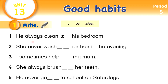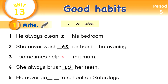Number one: he always cleans his bedroom. We add S because the subject is he. Number two: she never washes her hair in the evening. We add ES because the last letter in the verb is SH and the subject is she. Number three: I sometimes help my mom. We don't add anything to the verb because the subject is I.